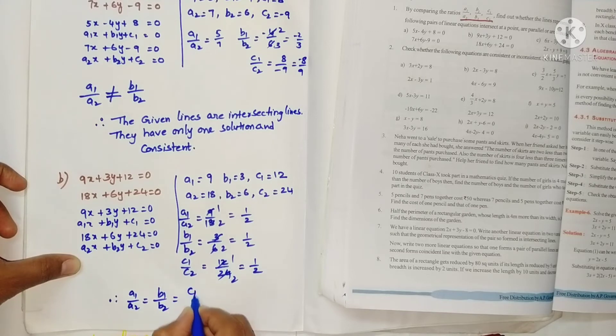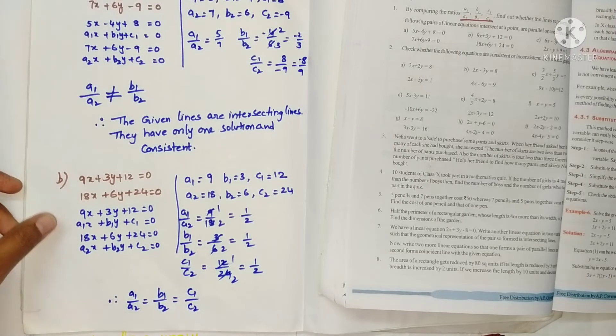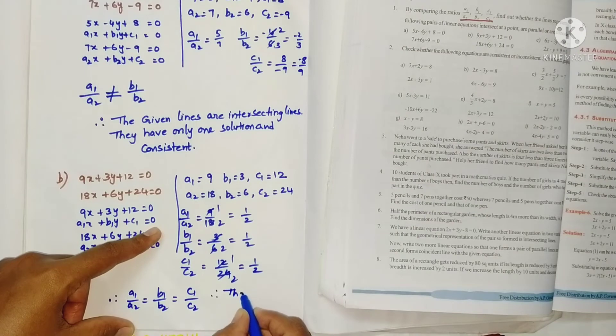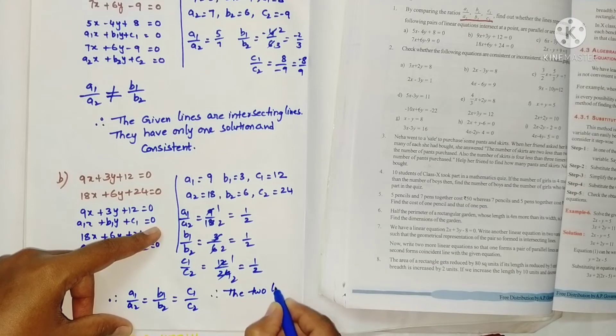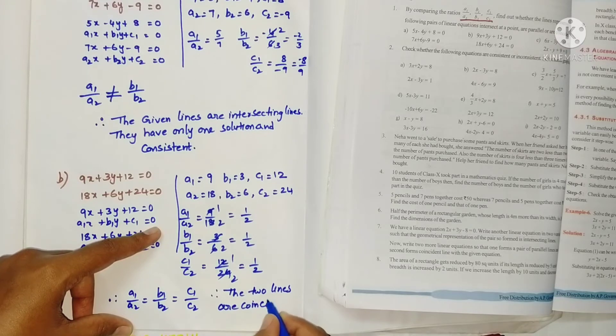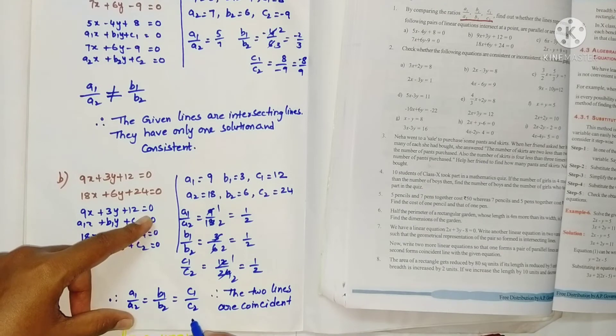So the two lines are coincident lines. Coincident lines means they have infinite number of solutions. They have infinite solutions.